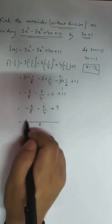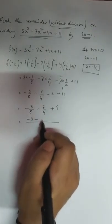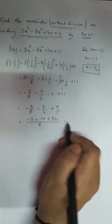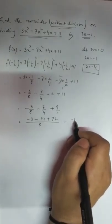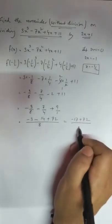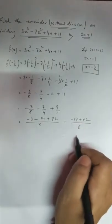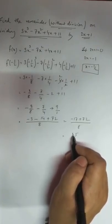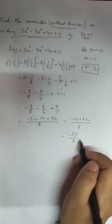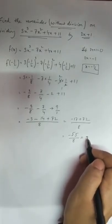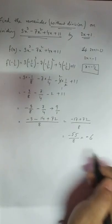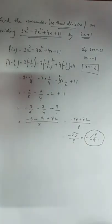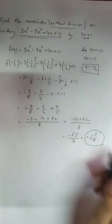We take the LCM of 8: (-3 - 14 + 72) / 8 = 55/8. So minus 3 minus 14 is minus 17, plus 72 gives 55. Wait — minus 17 plus 72 is 55, but with the sign: -3/8 - 14/8 + 72/8 = 55/8. So the remainder is minus 55/8, that is -6 and 7/8. This is the remainder by using the remainder theorem.